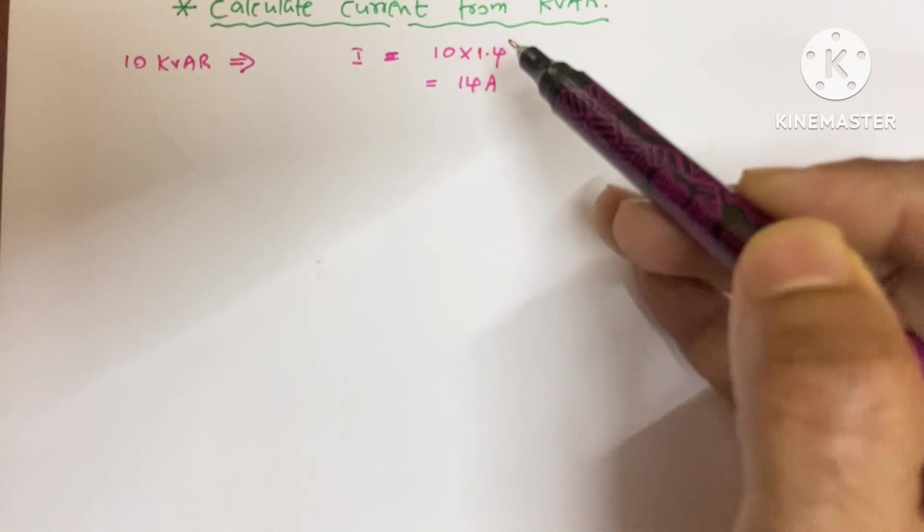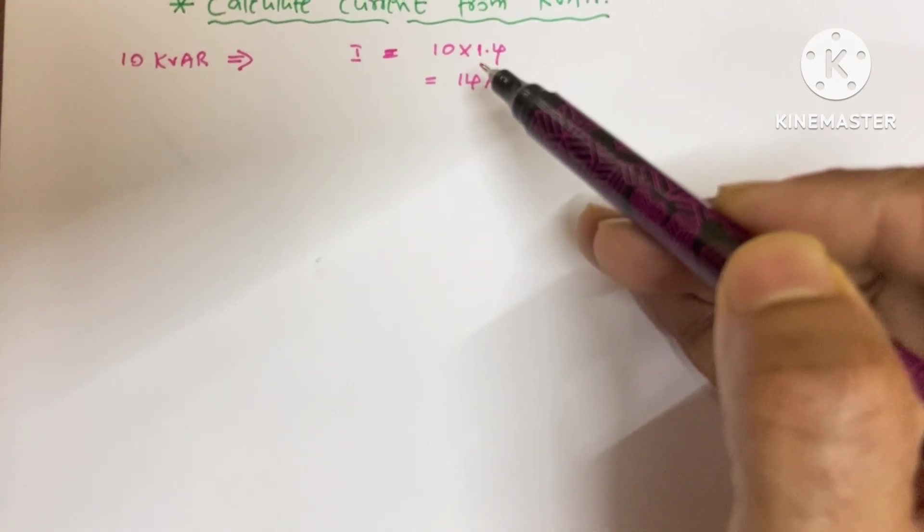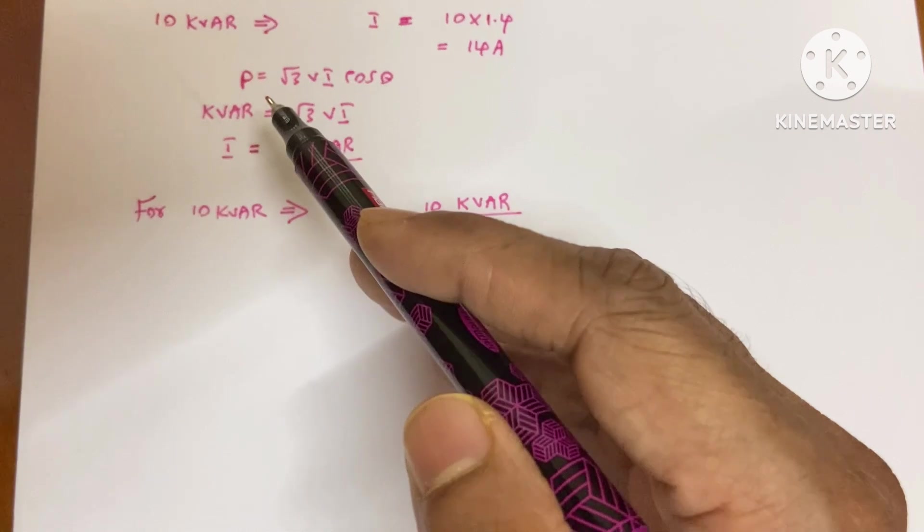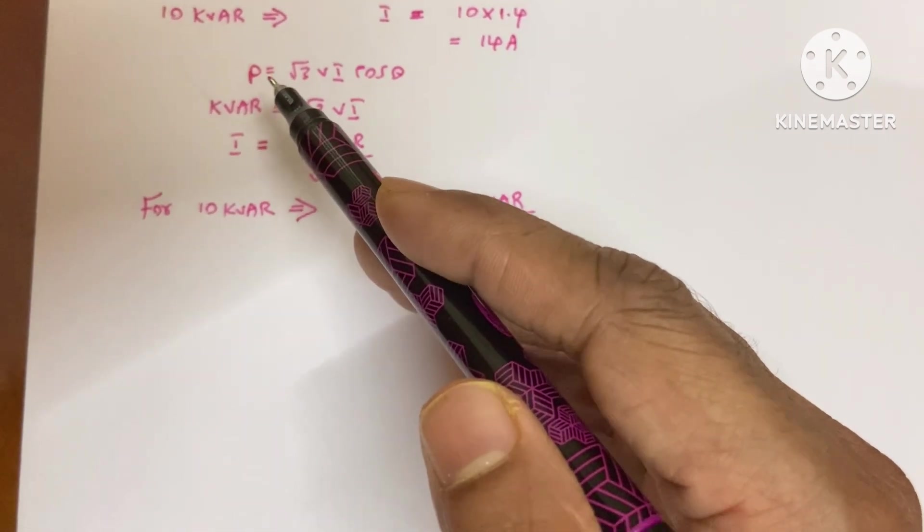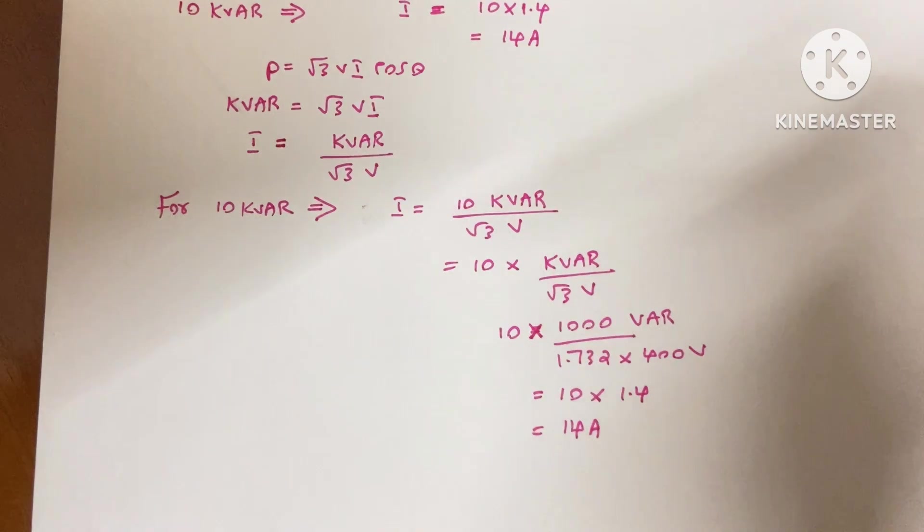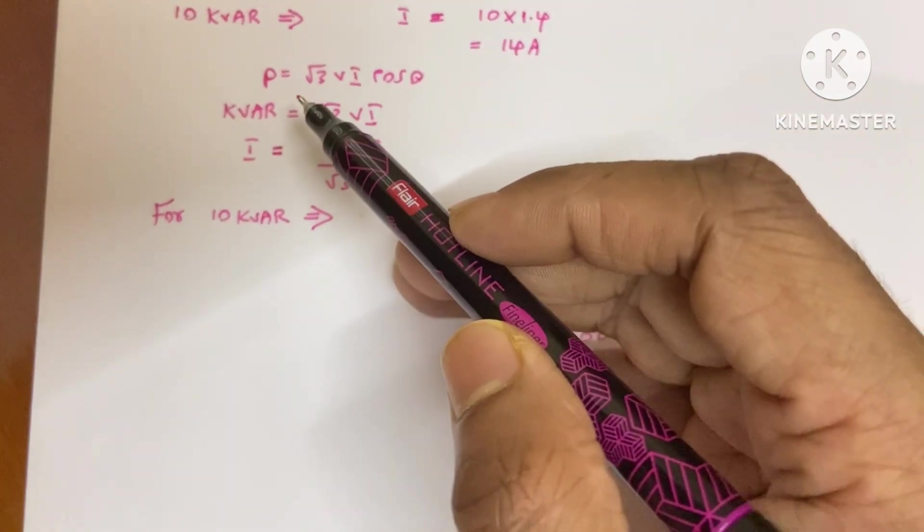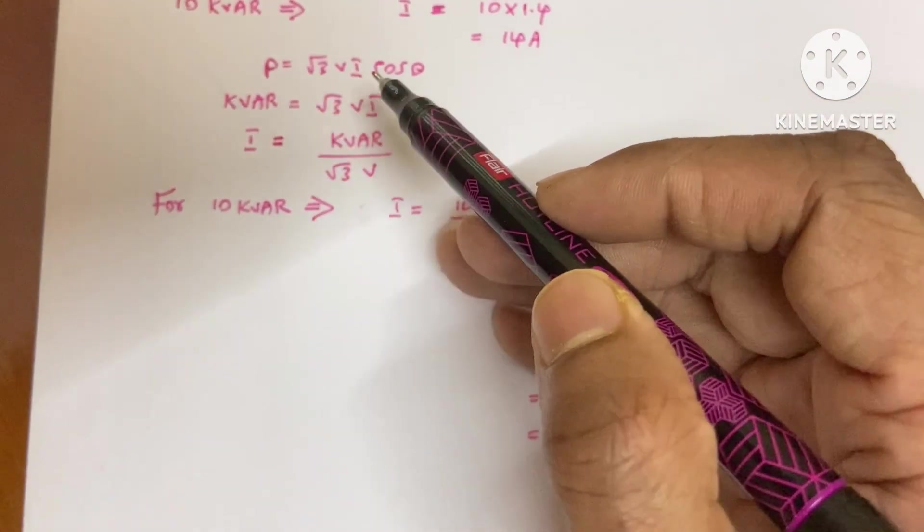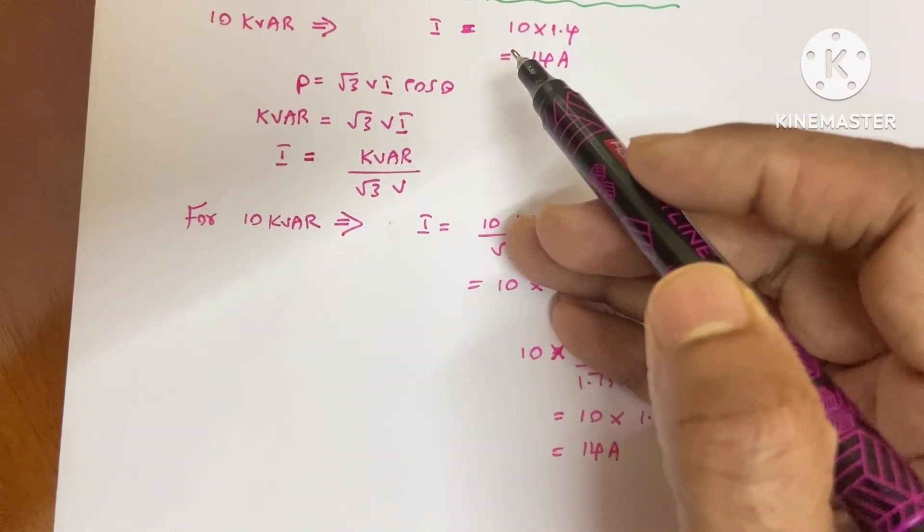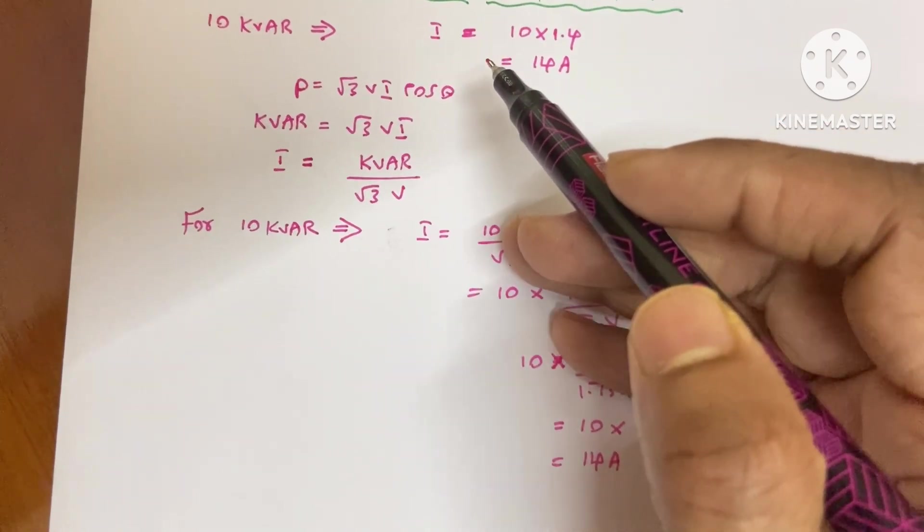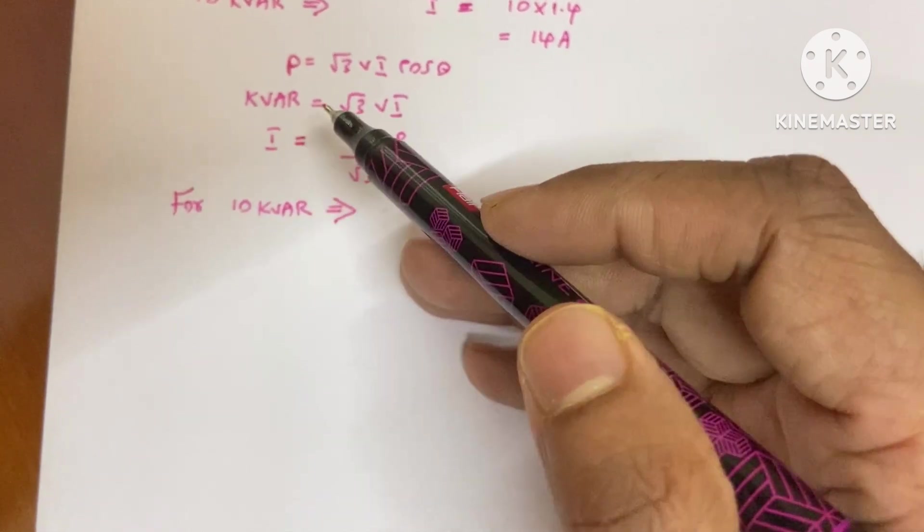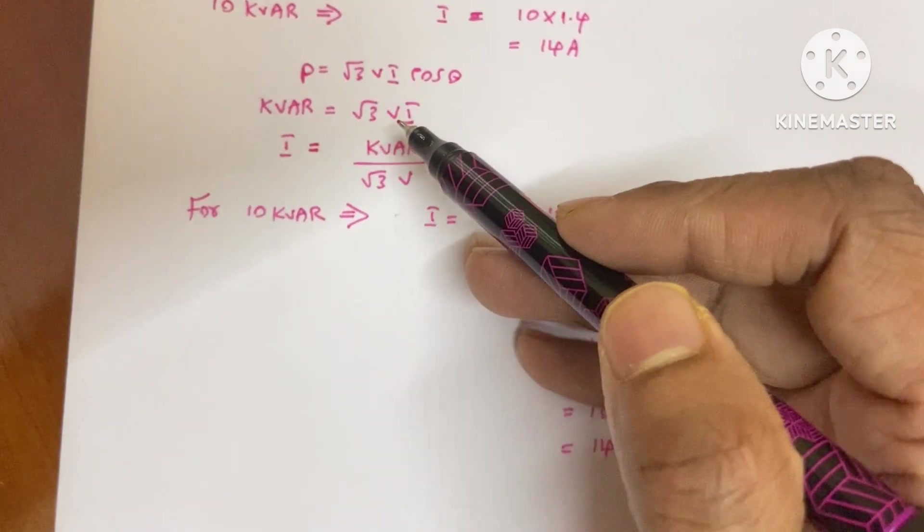How does this 1.4 come here? I'll discuss that. We know that the normal power equation is P equals √3 VI cosθ. If your power is in kilowatts, we use this equation. But for capacitor banks, we express power in KVAR. For KVAR, the equation is √3 VI.